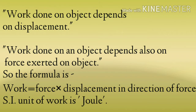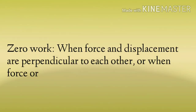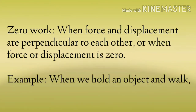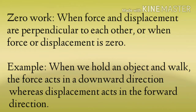Work done on an object depends on the force exerted on the object. Work is equal to force multiplied by displacement in the direction of force. Force को displacement से multiply करेंगे — force के direction में जो displacement हो रही है उससे — और इसकी SI unit होगी Joule. अब इसी से related एक topic है zero work. हम कौनसे condition में कह सकते हैं कि work नहीं हुआ? When force and displacement are perpendicular to each other, and when force or displacement is zero.